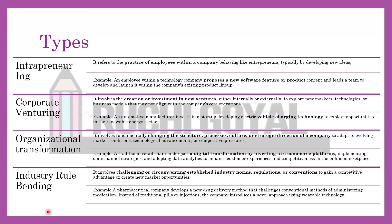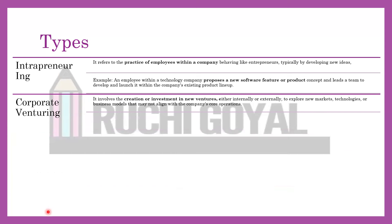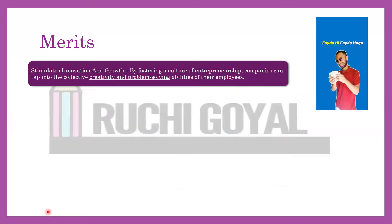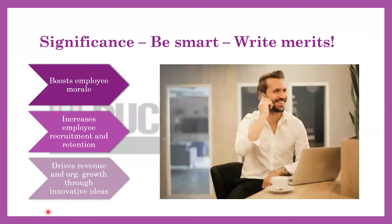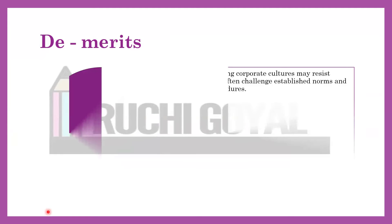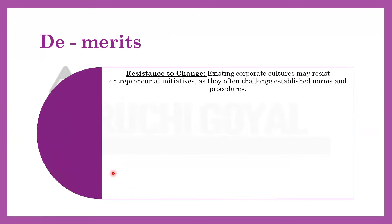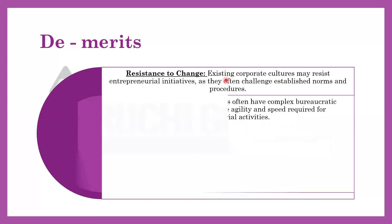So types ho gaye, merits ho gaye. Demerits karte hain. Is ke nuksaan kya hain? Sabse bada nuksaan hota hai Resistance to Change. For example, aapki organization 20 saal se chal rahi hai — 21 saal mein jaake woh bahut zyada resistant hogi ki koi nayi policy aaye.